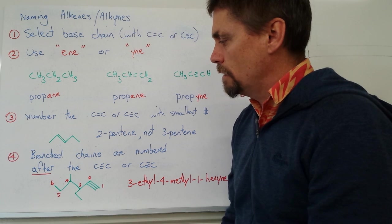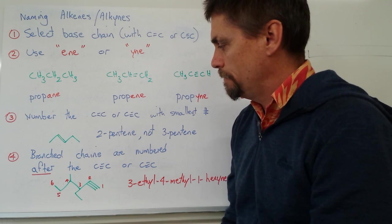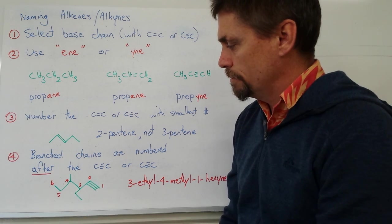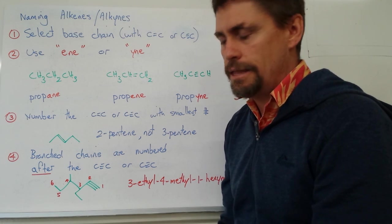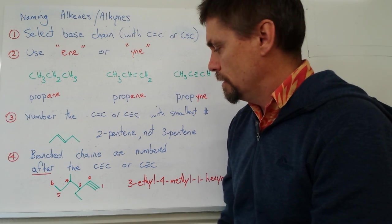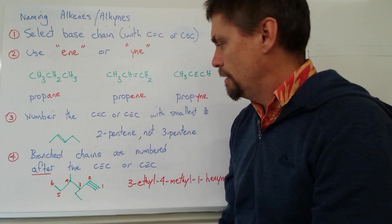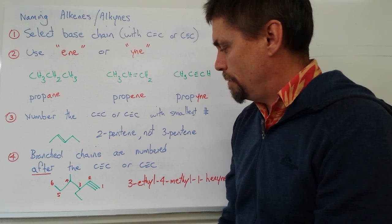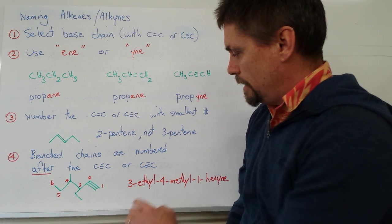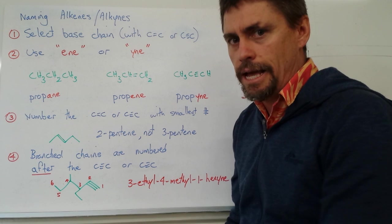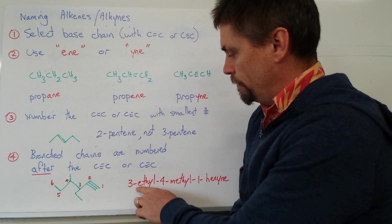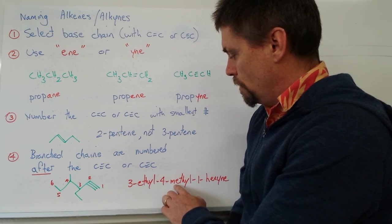We've also got some alkyl groups coming off our main carbon chain. At carbon number 3, we have an ethyl group — that's two carbons coming off. And at carbon number 4, we have a methyl group. To name this molecule fully, we list the substituents alphabetically: ethyl comes before methyl. So at carbon number 3 we have 3-ethyl, and at carbon number 4 we have 4-methyl, giving us 3-ethyl-4-methyl-1-hexyne.